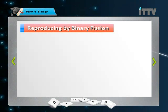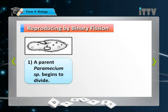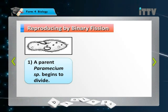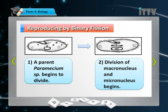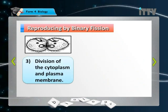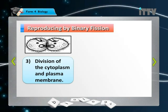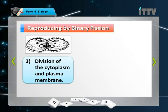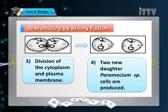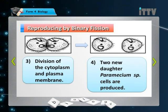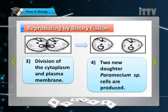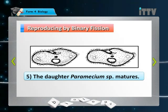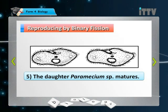Looking at binary fission in the diagram: a parent Paramecium begins to divide at the nuclei. The macronucleus and micronucleus division begins in diagram 2. In diagram 3, the nuclei have already divided into two and division of the cytoplasm and plasma membrane is occurring. In diagram 4, two new daughter Paramecium cells are produced. By diagram 5, the cells have matured into the complete slipper-shaped form. This is the asexual version of reproduction.